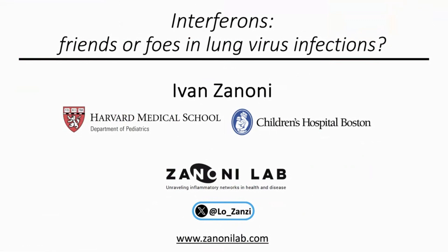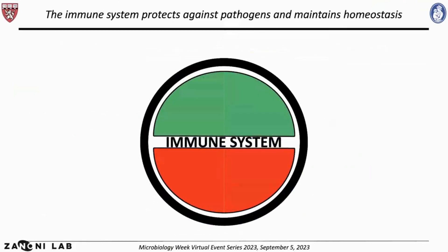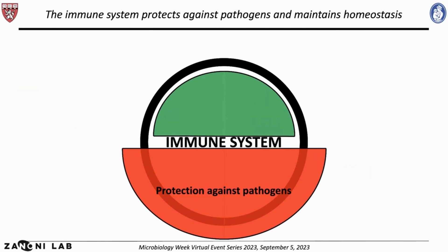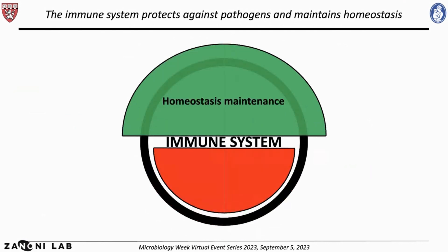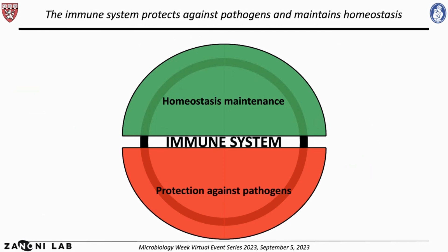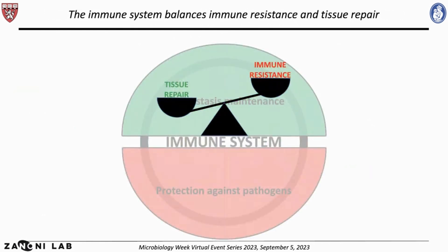Thank you for the nice introduction. I'm very happy to be virtually here today and to share some of our findings on the importance of interferons during lung virus infections. The immune system evolved to protect us against pathogens but also to maintain homeostasis. These two functions are achieved by maintaining a balance between immune resistance — the capacity to fight an invading pathogen — and tissue repair, the capacity to repair tissue after damage caused by the pathogen or by immune activation itself.